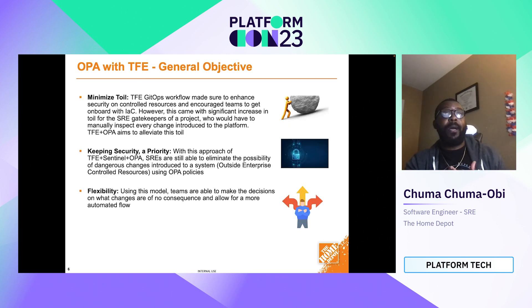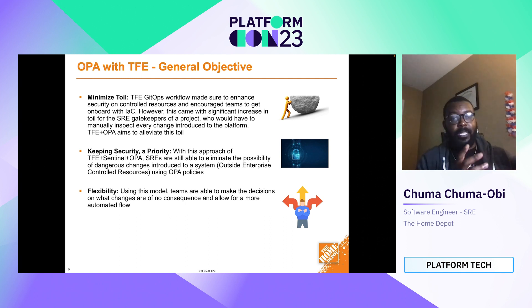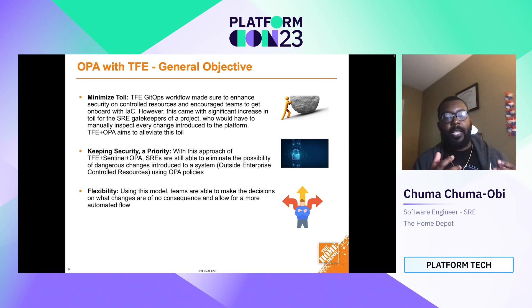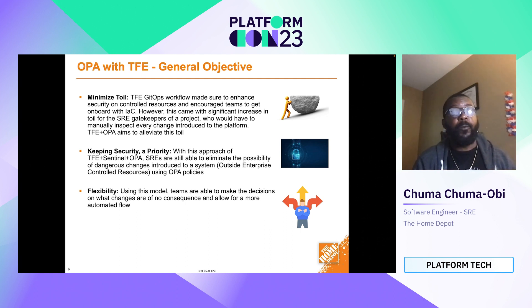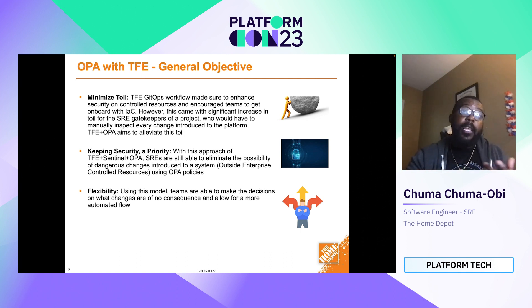Our objective was to minimize toil as much as possible to elevate that burden from the team, while keeping security a priority. We have TFE — Terraform Enterprise — handled by a whole team at Home Depot to implement Terraform across multiple teams. HashiCorp uses Sentinel as its own policy engine, and that's also going away — HashiCorp opted for OPA a while ago. In our current MVP structure, TFE went with Sentinel for company-wide security posture, and we also added OPA as an additional security layer, which introduced flexibility so teams could do more without us stifling their innovation.